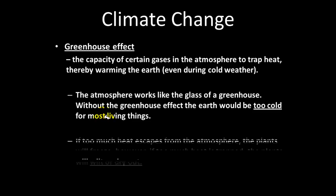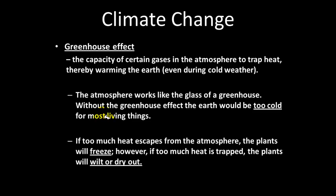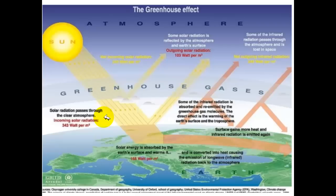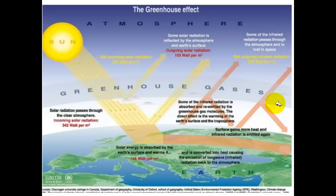It's a good thing. However, if too much heat escapes from the atmosphere, plants will freeze. And if too much heat is trapped, plants, people, and living things would wilt or dry out — that is the problem with the greenhouse. This graphic illustrates the greenhouse effect. It shows the sun, the 50 percent of radiation that reaches Earth, the percentage that bounces off into space, and the radiation trapped within the atmosphere by greenhouse gases.